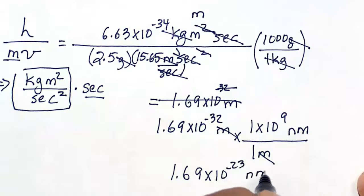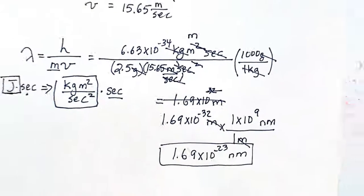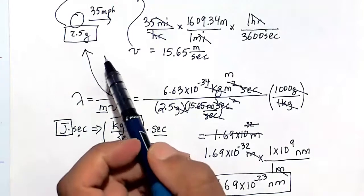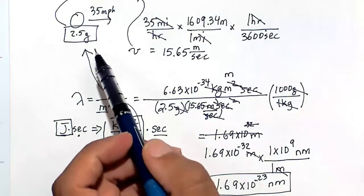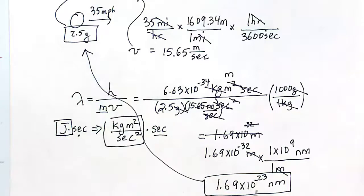10 to the minus 23 nanometers is very, very small. It's imperceptible, very hard to detect and measure. Now if this was an electron with a very small mass moving at the exact same speed, this would be a very appreciable number. That's what de Broglie was talking about when discussing the de Broglie wavelength.